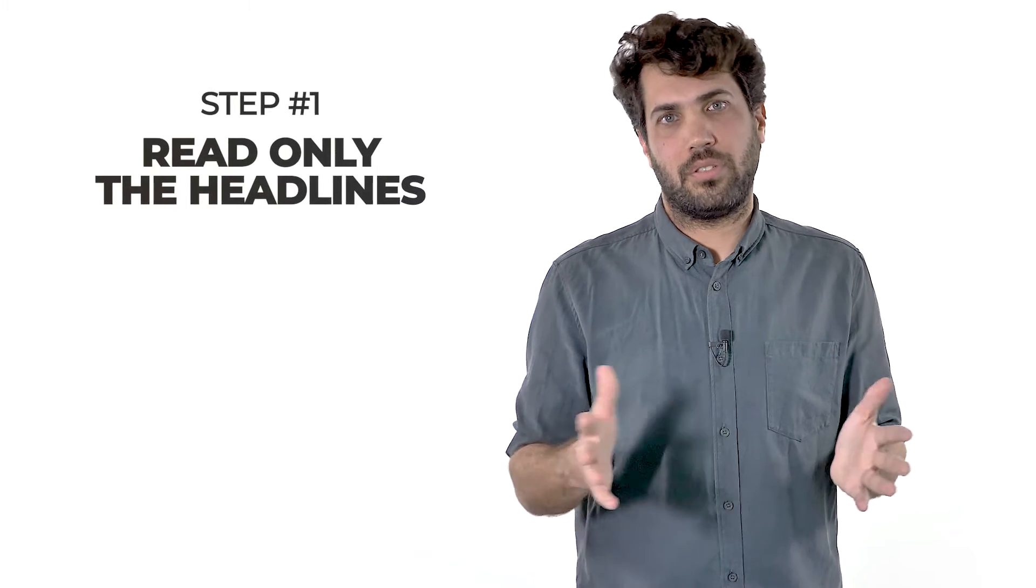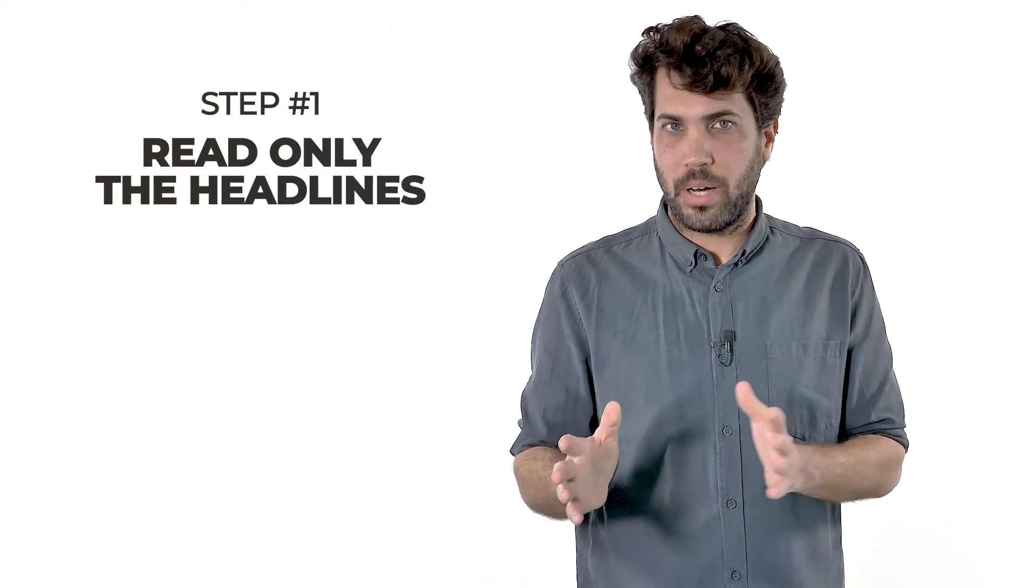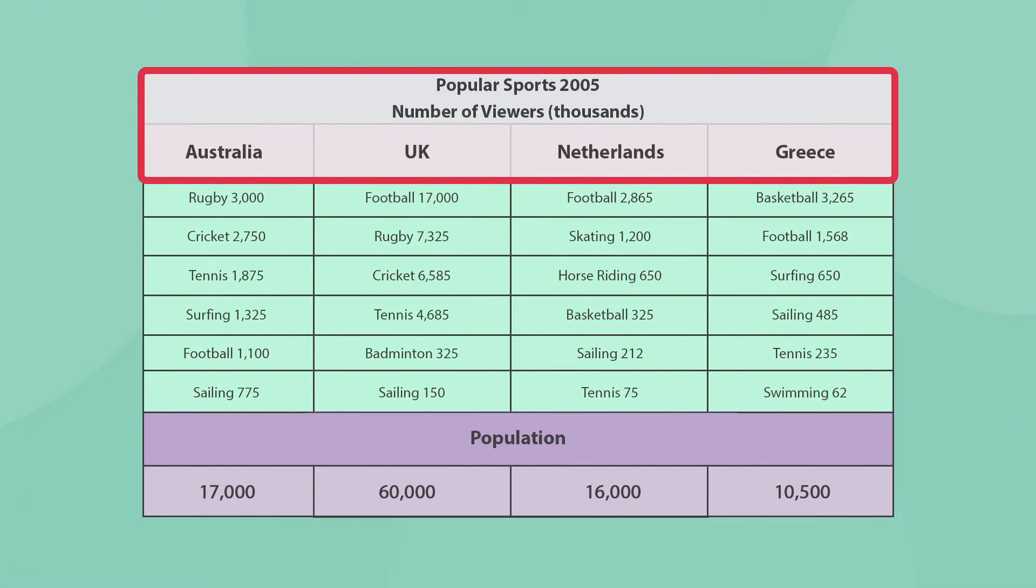First things first, get to know the table. Read only the headlines so you know what the data is all about. The numbers are irrelevant for now. Don't be tempted to take it all in at once or you will get confused. So, we know that the table talks about popular sports in four different countries, and that the number of viewers is presented in thousands. This is hugely important information. We will come back to that in a bit.